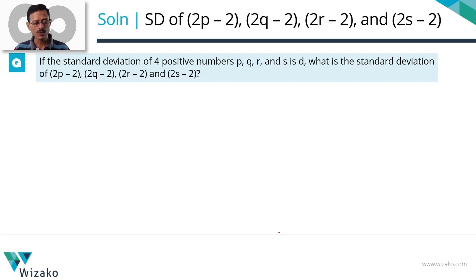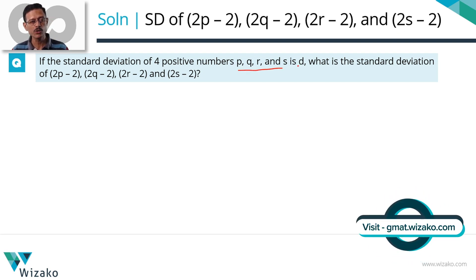Step one, let's start by finding out the standard deviation of 2P, 2Q, 2R, 2S. We need 2P-2, 2Q-2, 2R-2 and 2S-2. What we have as data is the standard deviation for P, Q, R, S. Step one, let's find out the standard deviation of 2P, 2Q, 2R and 2S.